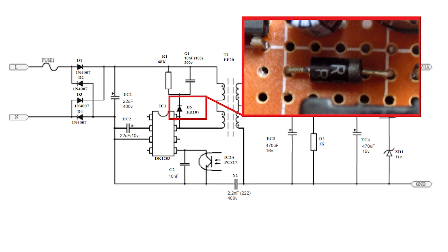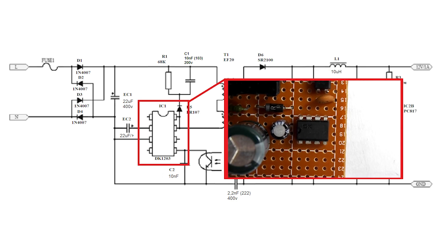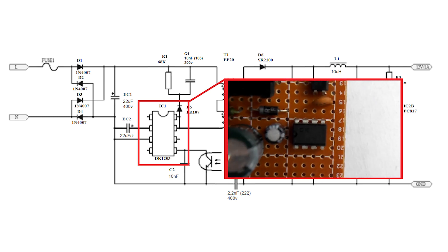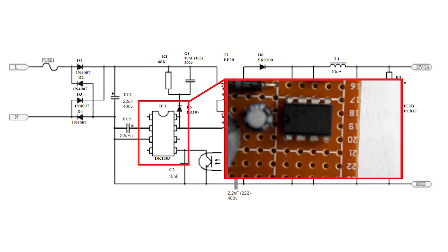D5 is the FR107 pulsed high frequency diode. IC1 is the heart of our power supply. Chip DK1203.